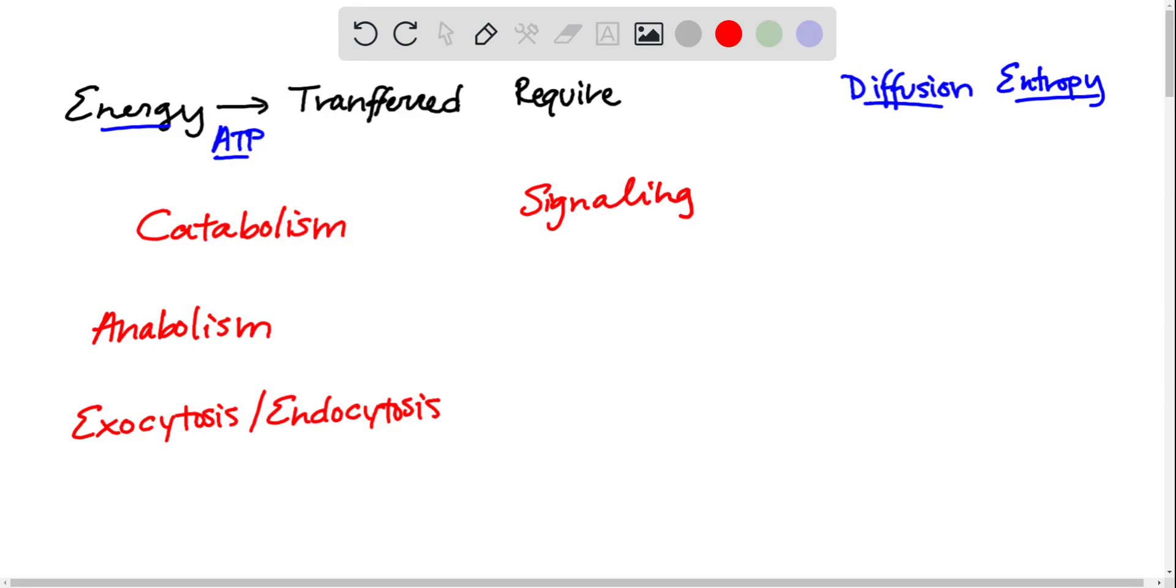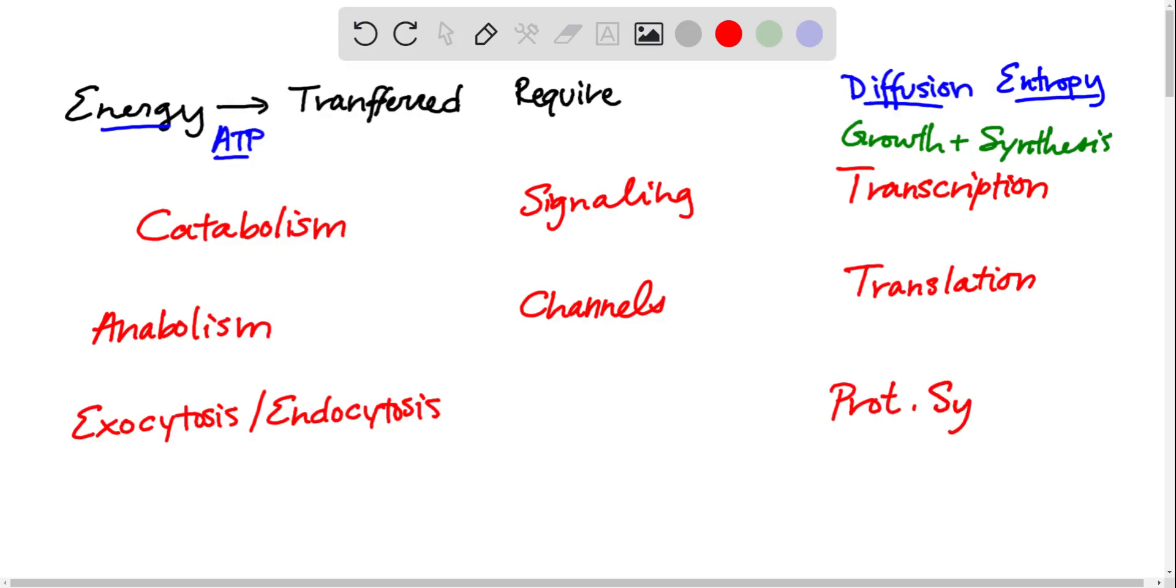You have channels across the membrane responsible for bringing in certain products and for propagating certain signals along the cell. You're also going to conduct transcription and translation. These are important for making proteins, important for replicating the DNA inside the cell, and fall under the category of the growth and synthesis function of all cells. You have that example of protein synthesis that was given in the problem.